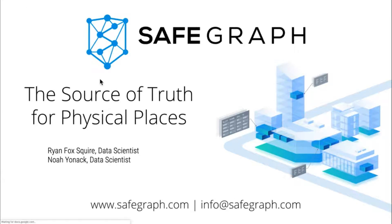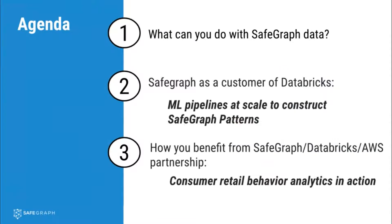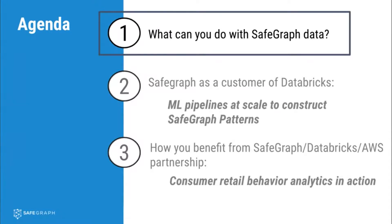The presentation is basically divided into three sections. First, I'll explain what SafeGraph is and what you can do with SafeGraph data so you have sufficient context for the rest of the talk. Then I'll go through what is essentially a case study of what not to do when building ML pipelines, and how Databricks helped us solve some of these internal technical challenges. Finally, I'll highlight some of the collaborations we've been doing with Databricks and AWS related to the AWS Data Exchange.